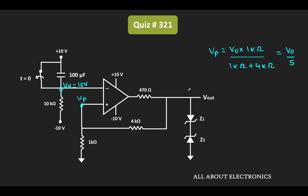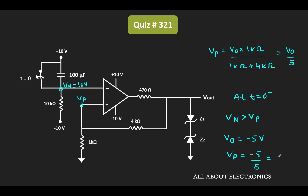Initially, we don't know the state of the output voltage, but Zener diodes Z1 and Z2 clamp the output voltage to ±5V, so it could be +5V or -5V. At t equal to 0-, since Vn is greater than Vp, the output voltage Vout will be negative — clamped to -5V. Hence Vp will be equal to -5 divided by 5, that is -1V.